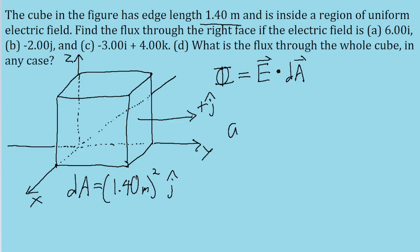So let's first solve part a, where the flux is 6i. So the flux has a value of 6 in the positive i direction, and we're dotting that with our area vector of 1.4 squared in the j hat direction. Now this is pretty simple to calculate as long as you're familiar with your dot product rules,